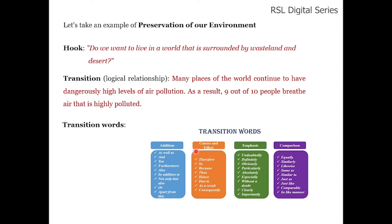You also write about causes and effect. The effect of degradation in the environment is pollution, and due to this pollution, 9 out of 10 people find it difficult to breathe. For cause-and-effect transitions, you can use: therefore, so, because, thus, hence, due to, as a result, and consequently.